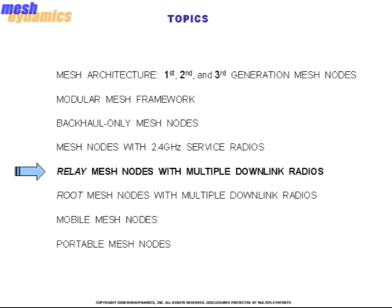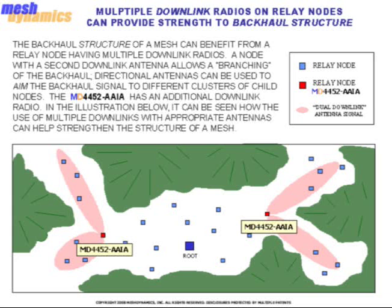Next, we discuss relay mesh nodes with multiple downlink radios. The backhaul structure of a mesh can benefit from a relay node having multiple downlink radios. A node with a second downlink antenna allows a branching of the backhaul, and directional antennas can be used to aim the backhaul signal to different clusters of child nodes. The MD-4452-AAIA has an additional downlink radio. As seen in the illustration below, multiple downlinks with appropriate antennas can help strengthen the structure of a mesh, and since each downlink is on a different channel, there will be no contention between the two clusters of child nodes.